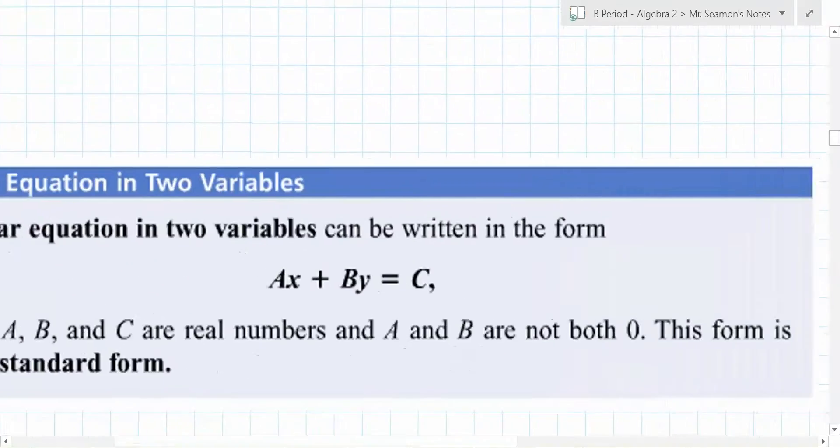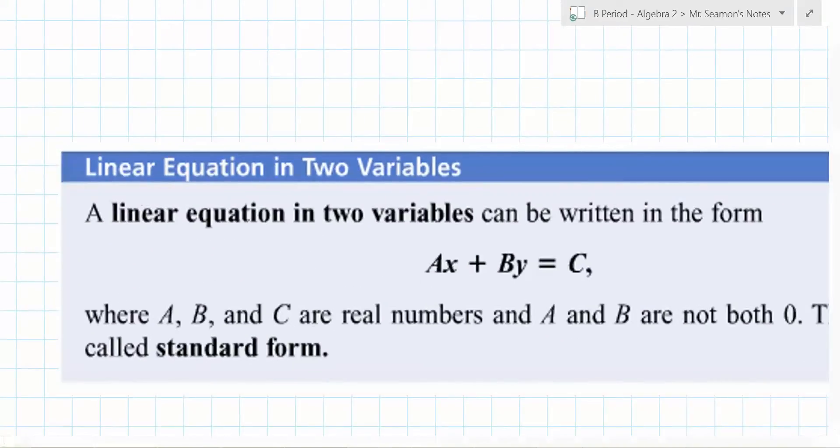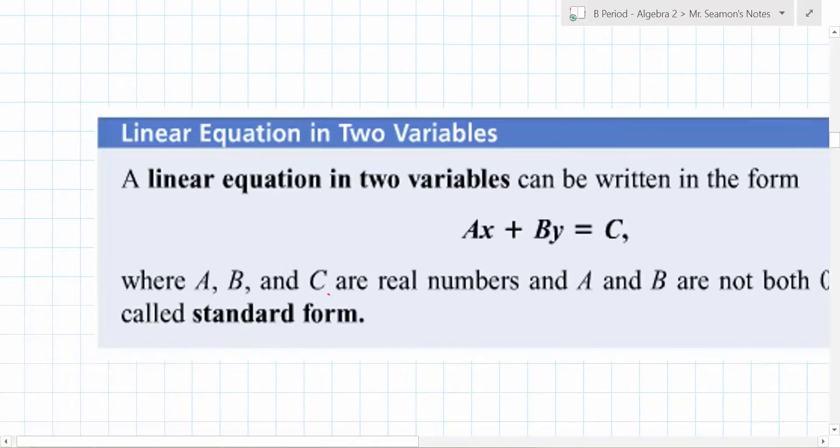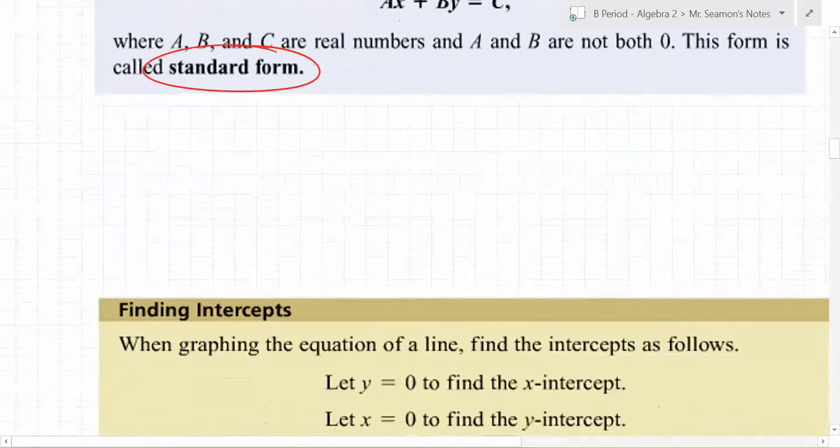So here is one form of a line right here. A linear equation and two variables can be written in the form of ax plus by equals c, where a, b, and c are real numbers, and a and b are not both 0. One of them has to not be 0. Otherwise, you have 0 equals a number, and that's not what you want. This is called standard form. Are there other forms? Yeah. This is one of them. This is just one of them.